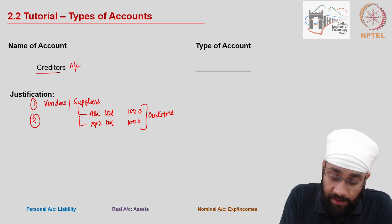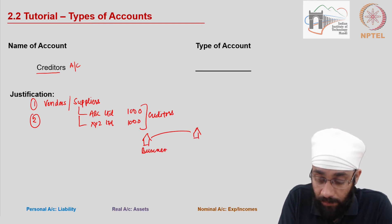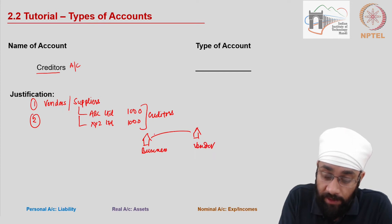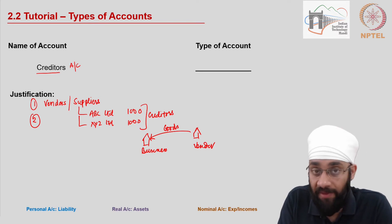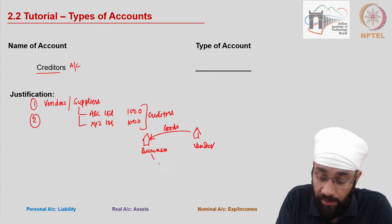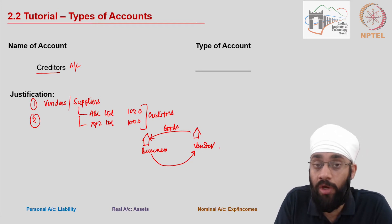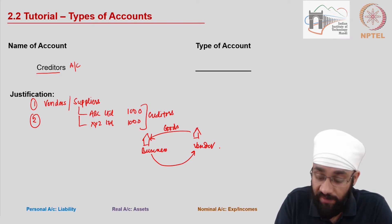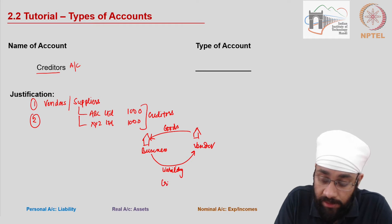Let's understand the nature of creditors. Let's say there are two businesses — your business and your vendor. The vendor is going to supply goods to the business, and the business does not pay in cash right now. Therefore, a new liability is created. The business has to pay this vendor at some point — after two months, for example. So there is a new liability created, and the name of that liability is creditors.